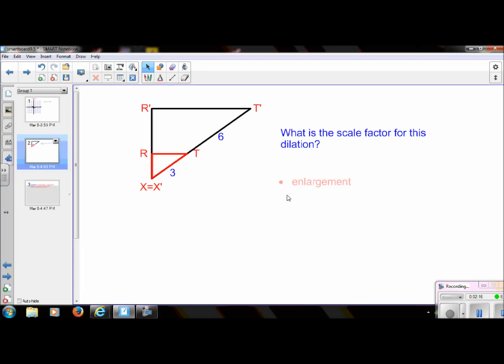So that's the first thing I need to do is recognize if it's a reduction or an enlargement. Because I have t here and t prime, it's an enlargement. Then I need to figure out what the scale factor is.